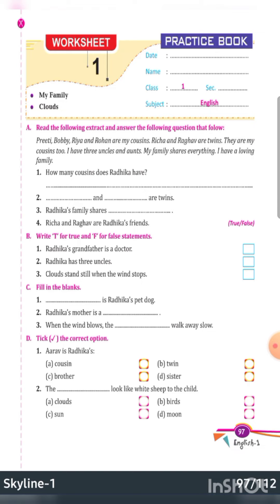Number two: dash and dash are twins. This is given already in the second sentence, so you will mention the names. Number three: Radhika's family shares — what do they share? You will find and write. Number four: Richa and Raghav are Radhika's friends — is it true or false? You will find yourself. Who are they? Whether they are friends or not.